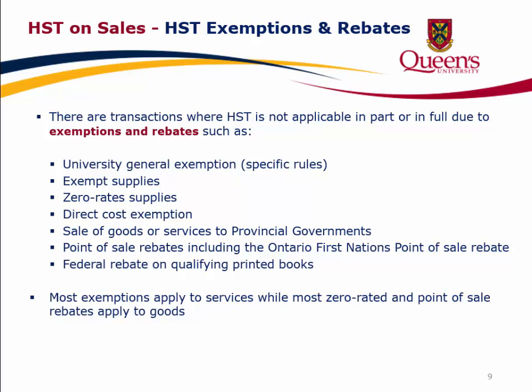HST exemptions and rebates. There are transactions where HST is not applicable in part or in full due to exemptions and rebates, such as the university general exemption, exempt supplies, zero-rated supplies, direct cost exemption, sale of goods or services to provincial governments, point of sale rebates including the Ontario First Nations point of sale rebate, and the federal rebate on qualifying printed books. Most exemptions apply to services, while most zero-rated and point of sale rebates apply to goods.